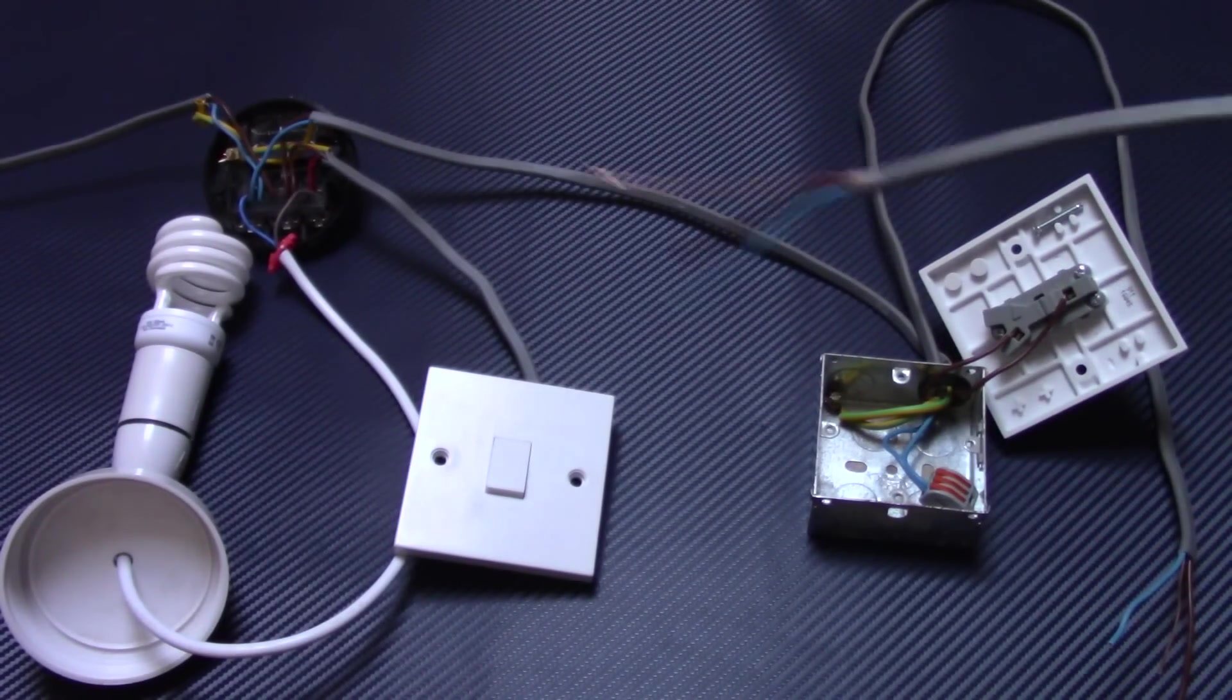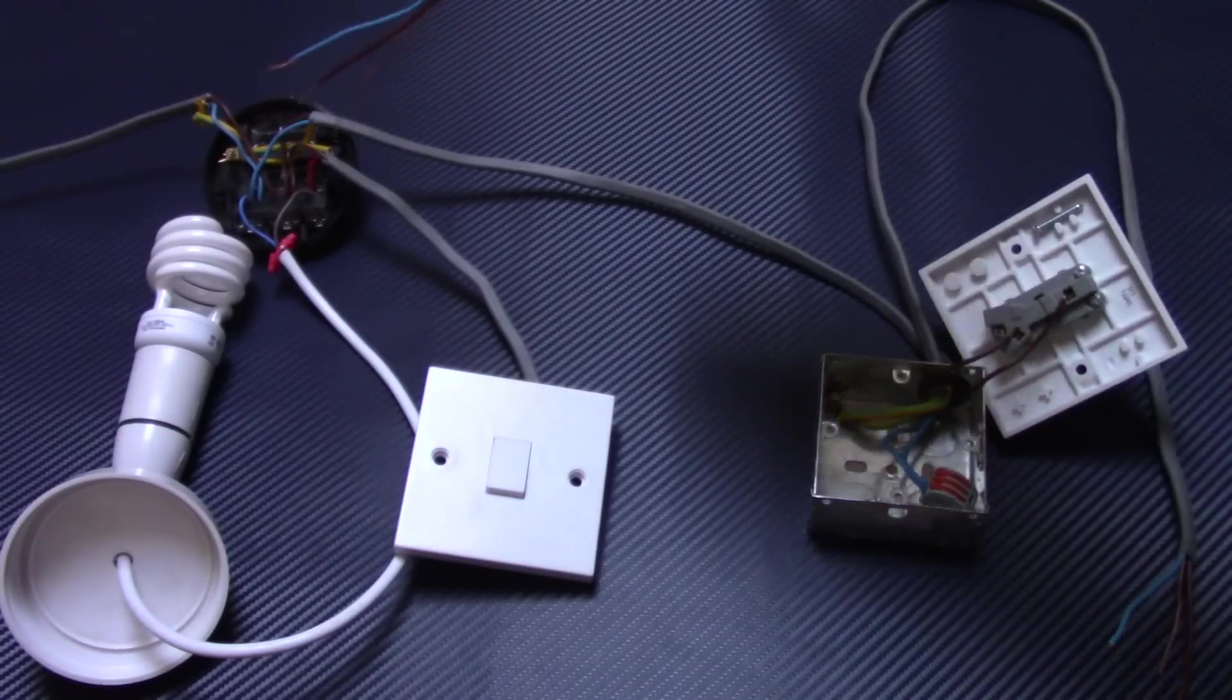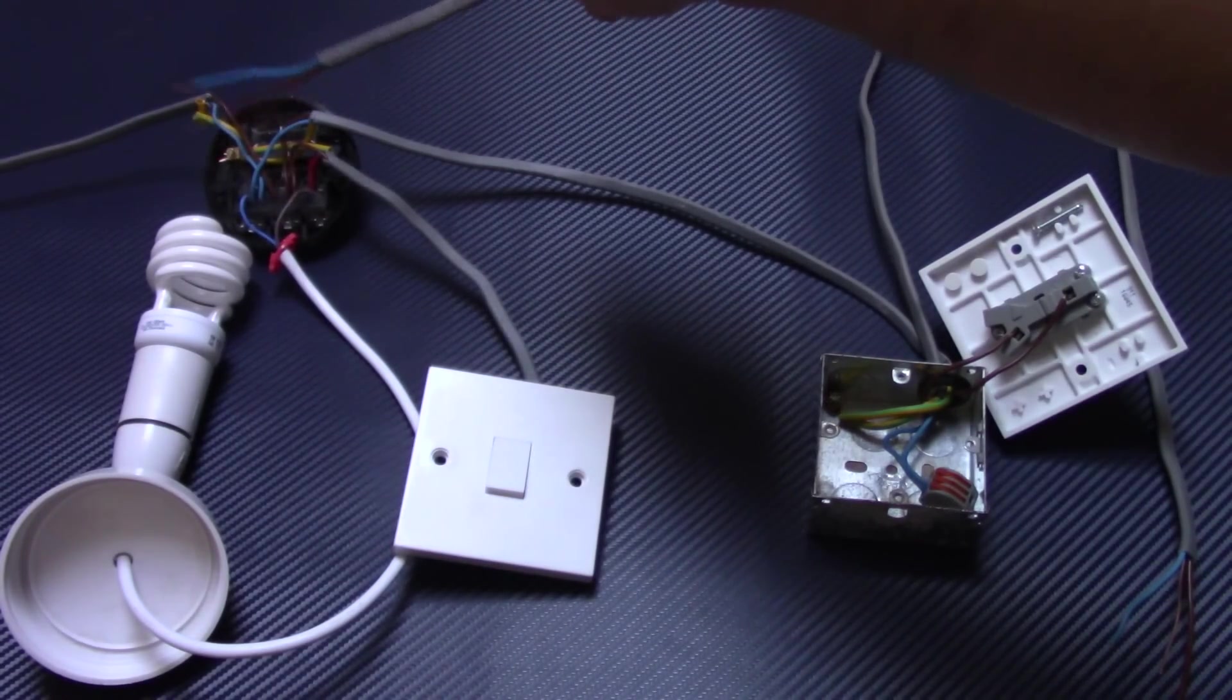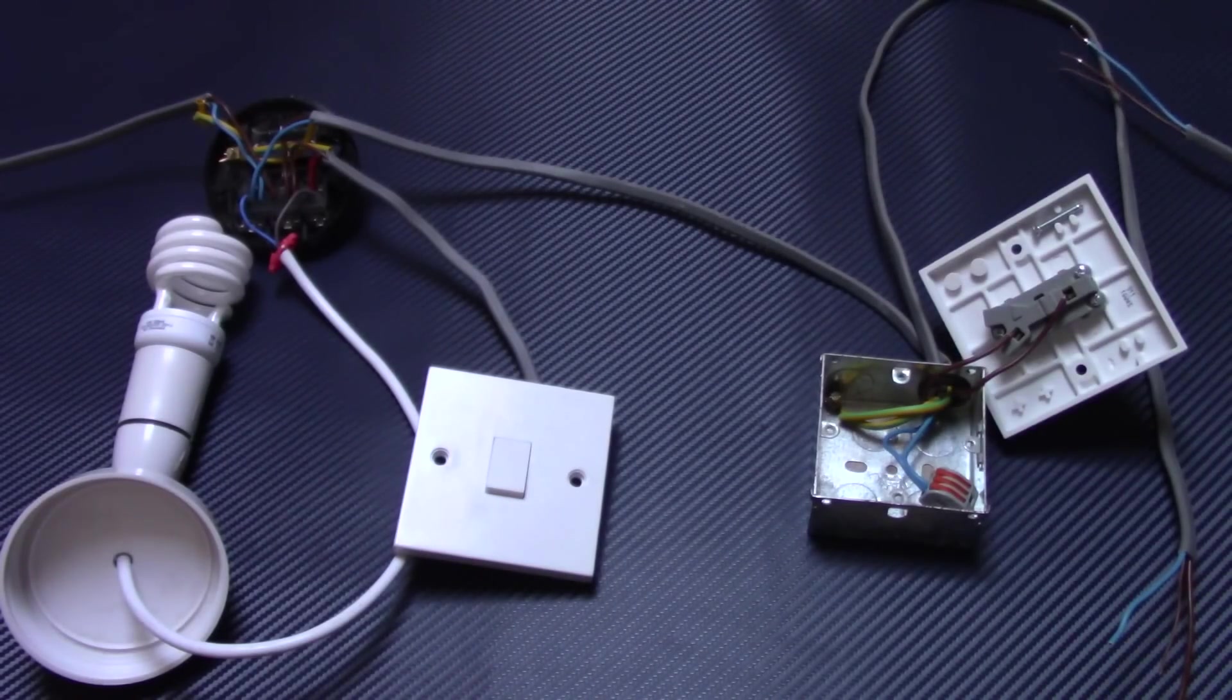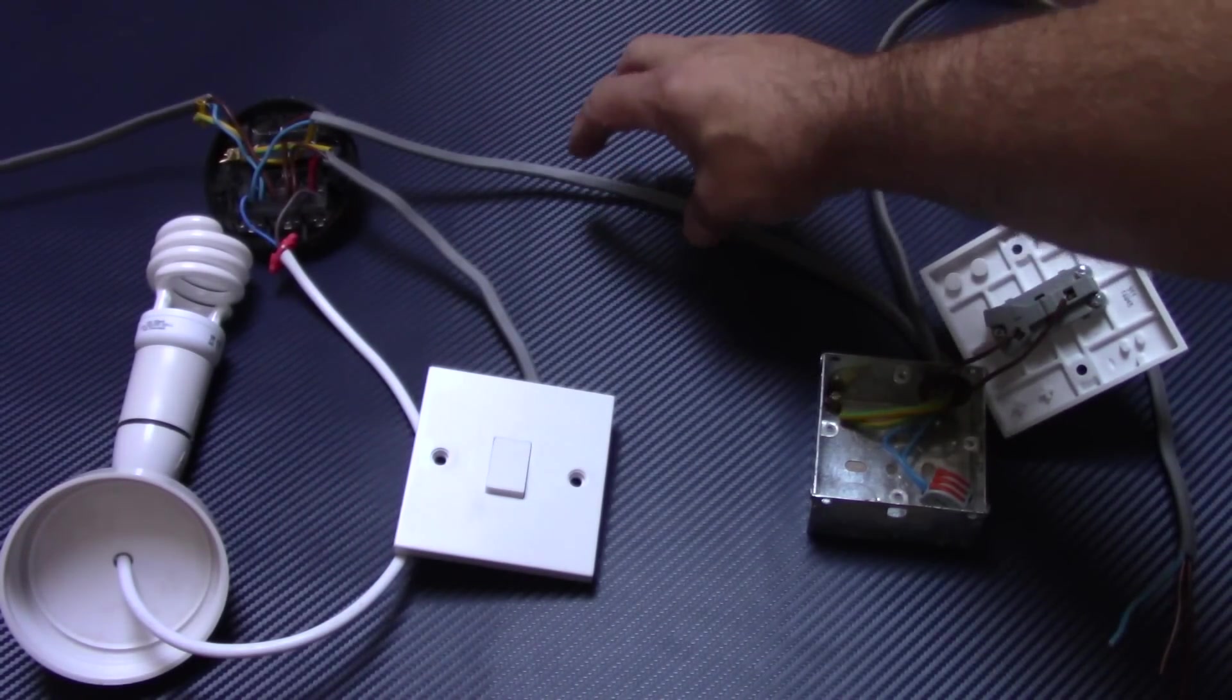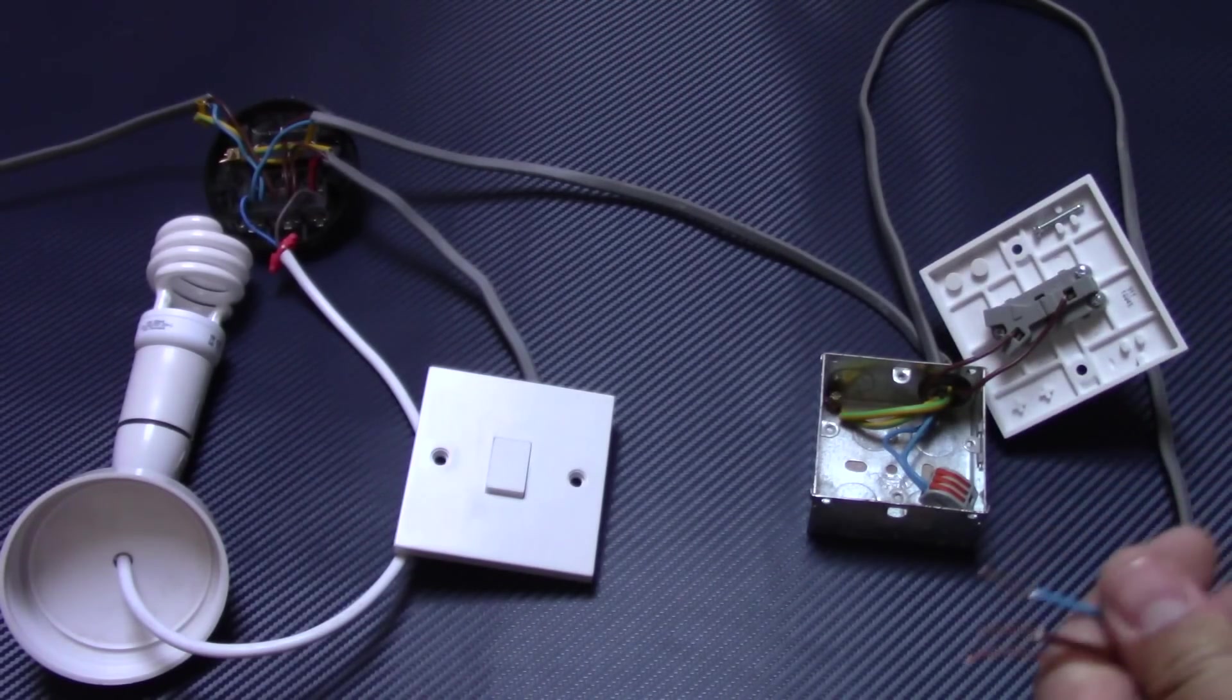One, you can try to push another neutral to the neutral terminal in this ceiling rose and live to loop in this ceiling rose. Or you can make a junction box on this cable somewhere in the ceiling, but this has to be accessible, and then from this split this cable to another room.